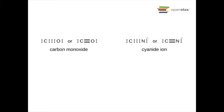Carbon monoxide and cyanide are examples of compounds with triple bonds. In carbon monoxide, three pairs of electrons are shared. Carbon has a lone pair plus six shared electrons for a total of eight. The same goes for oxygen. In the cyanide ion, the same holds true for nitrogen and carbon.